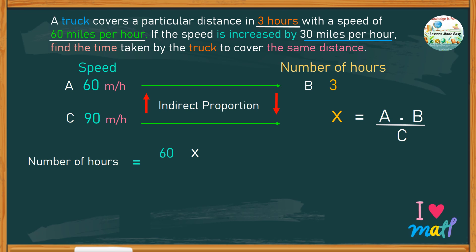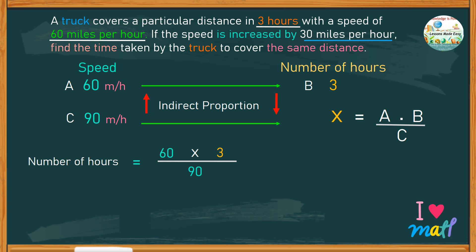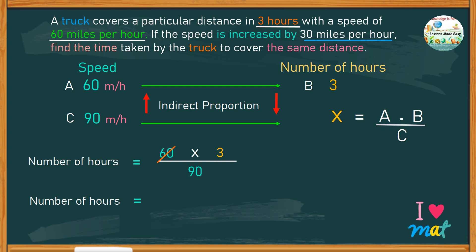The product of a and b will then be divided by the value of c, which is 90, to find the number of hours. We can simplify the given numbers — we can reduce 60 and 90 down to 2 and 3.